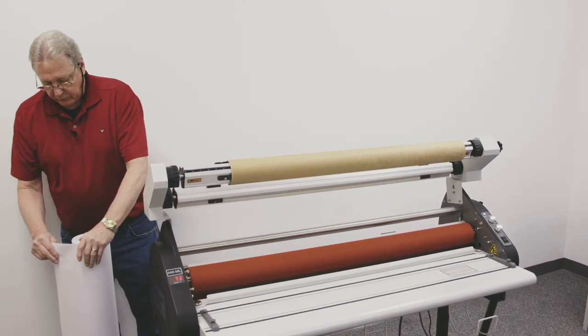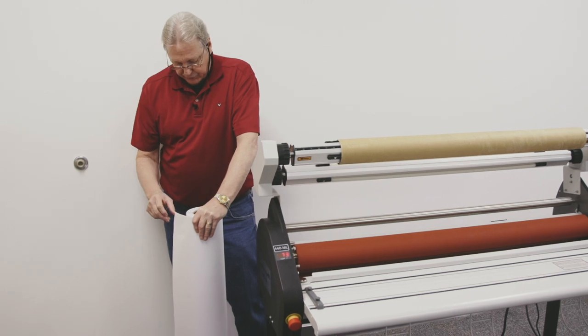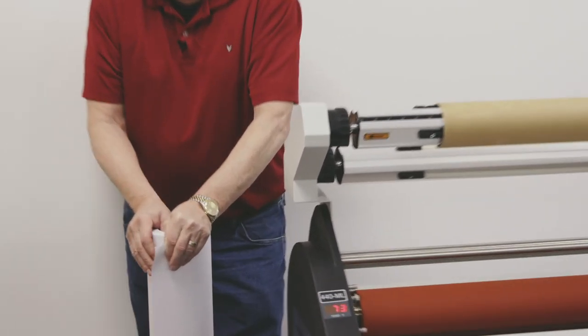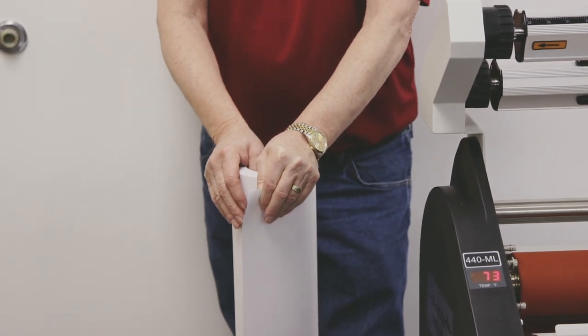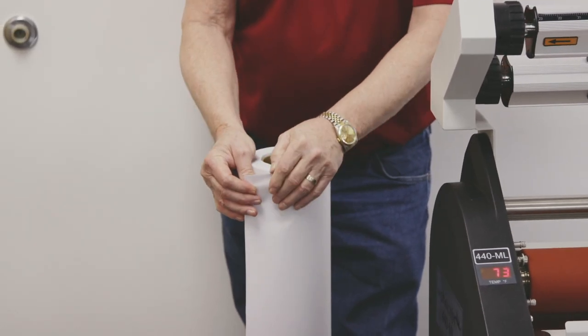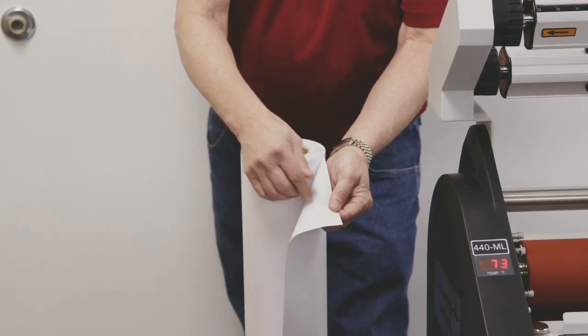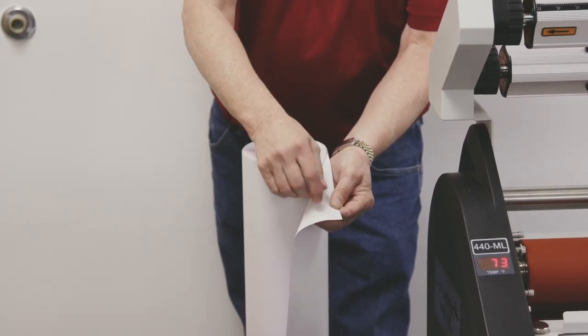Now I'm going to load the PSA over laminate on the machine. One thing to note is films can come in wound in one or two directions. This is what's known as a poly-in where the release liner is on the inside of the roll with the adhesive.